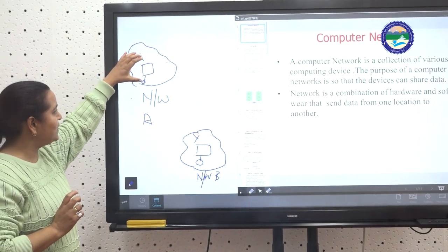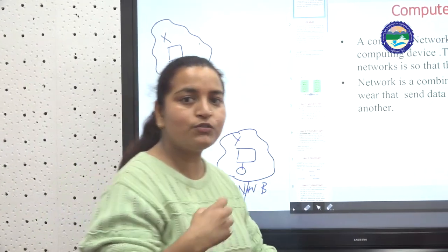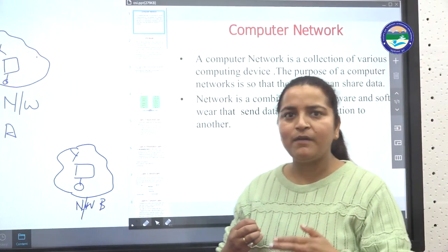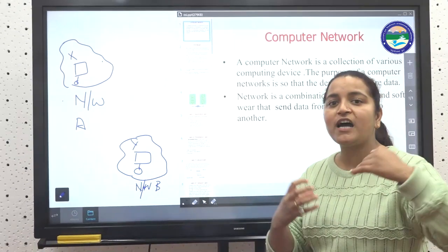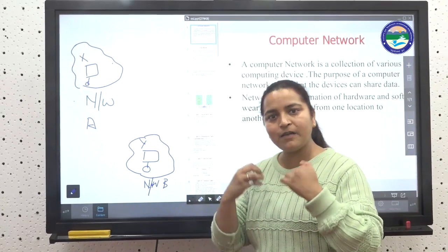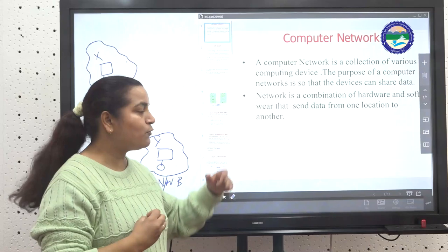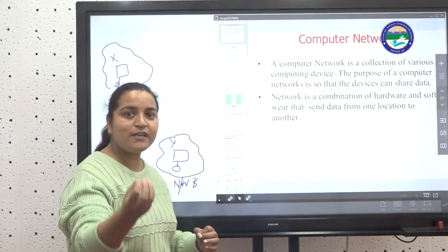Person X in network A wants to communicate with person Y and send a message. This is the same as when we send messages on WhatsApp, use video conferencing, or send messages on Gmail or Instagram. The message must reach correctly.